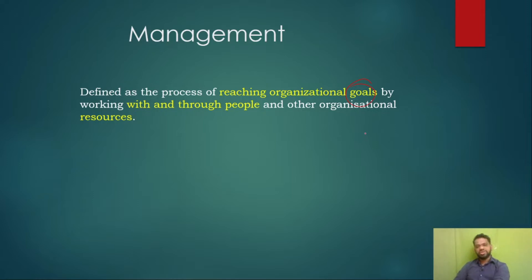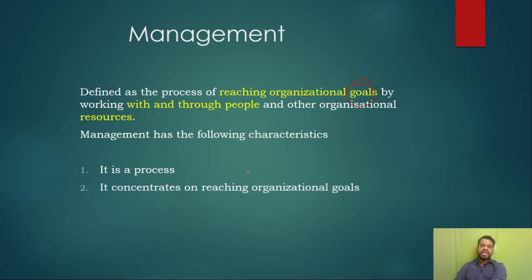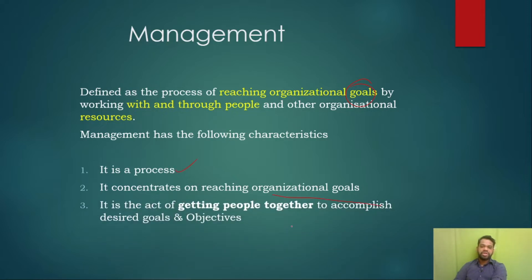Effective execution of a common goal in the organization — this is the definition and the main characteristics. It has a certain process to go through and certain organizational goals, to ensure that people work together to achieve these goals and objectives. That is management.